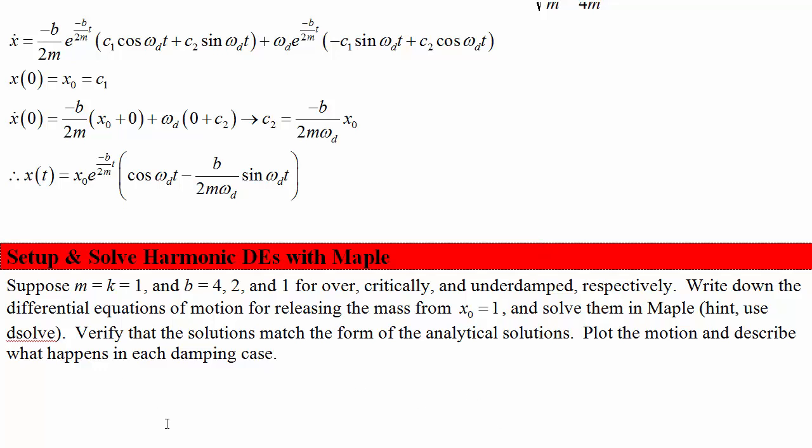The example problem that's more representative of what we would do in this course is suppose we know the mass and the spring constant and we have these possible damping coefficients for over, critically, and underdamped respectively.